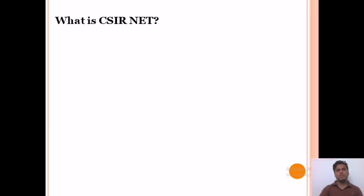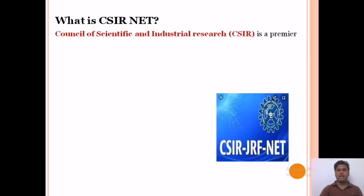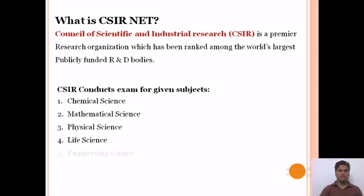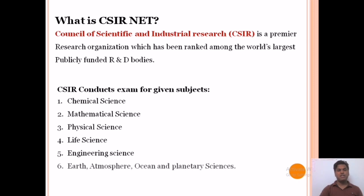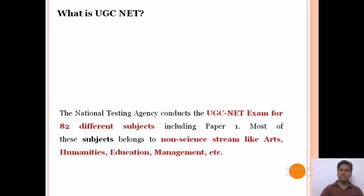The Council of Scientific and Industrial Research, CSIR, is the primary research organization ranked among the world's largest publicly funded research and development bodies. The CSIR conducts exams for the following six subjects: Chemical Science, Mathematical Science, Physical Science, Life Science, Engineering Science, and Earth, Atmosphere, Oceans and Planetary Science.